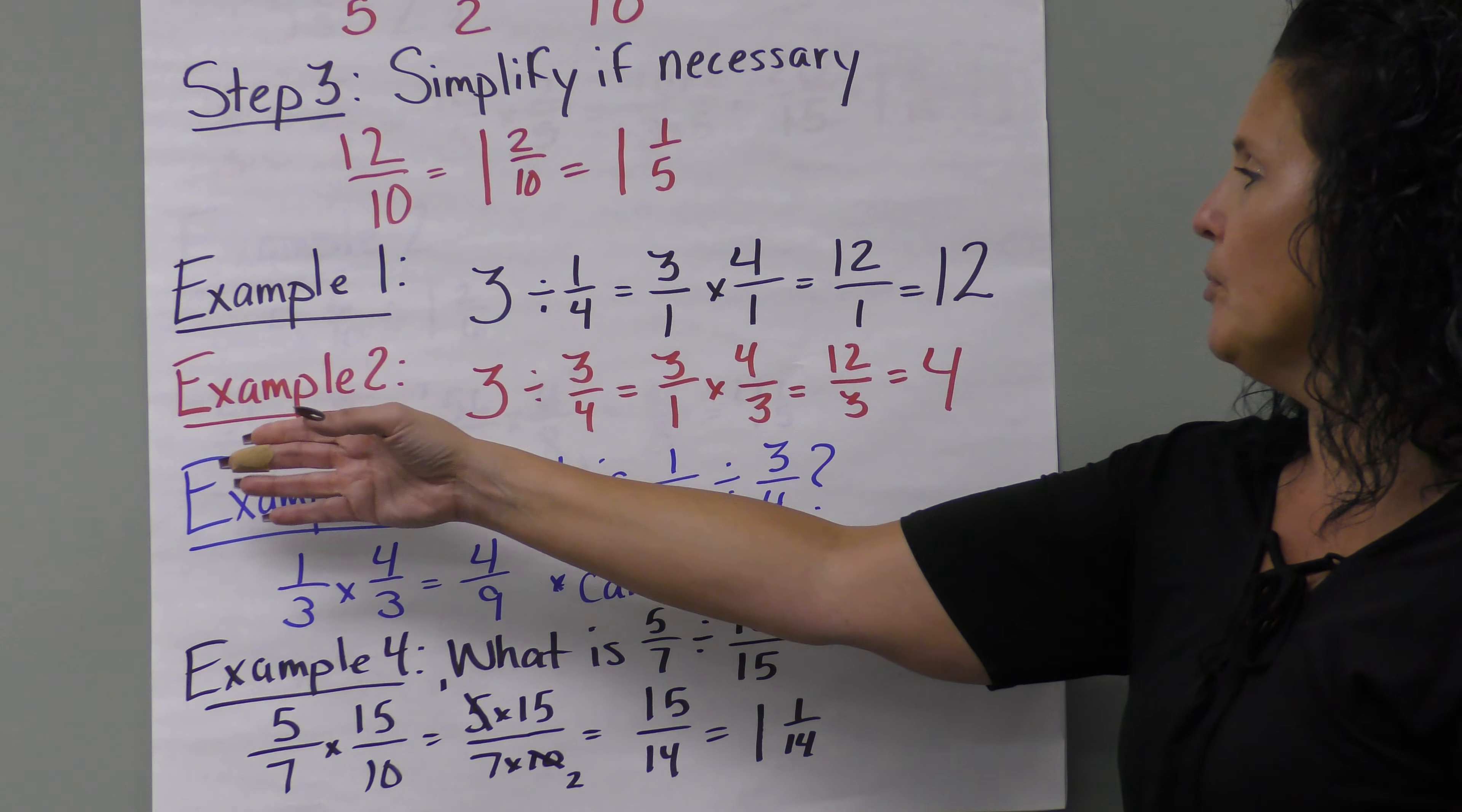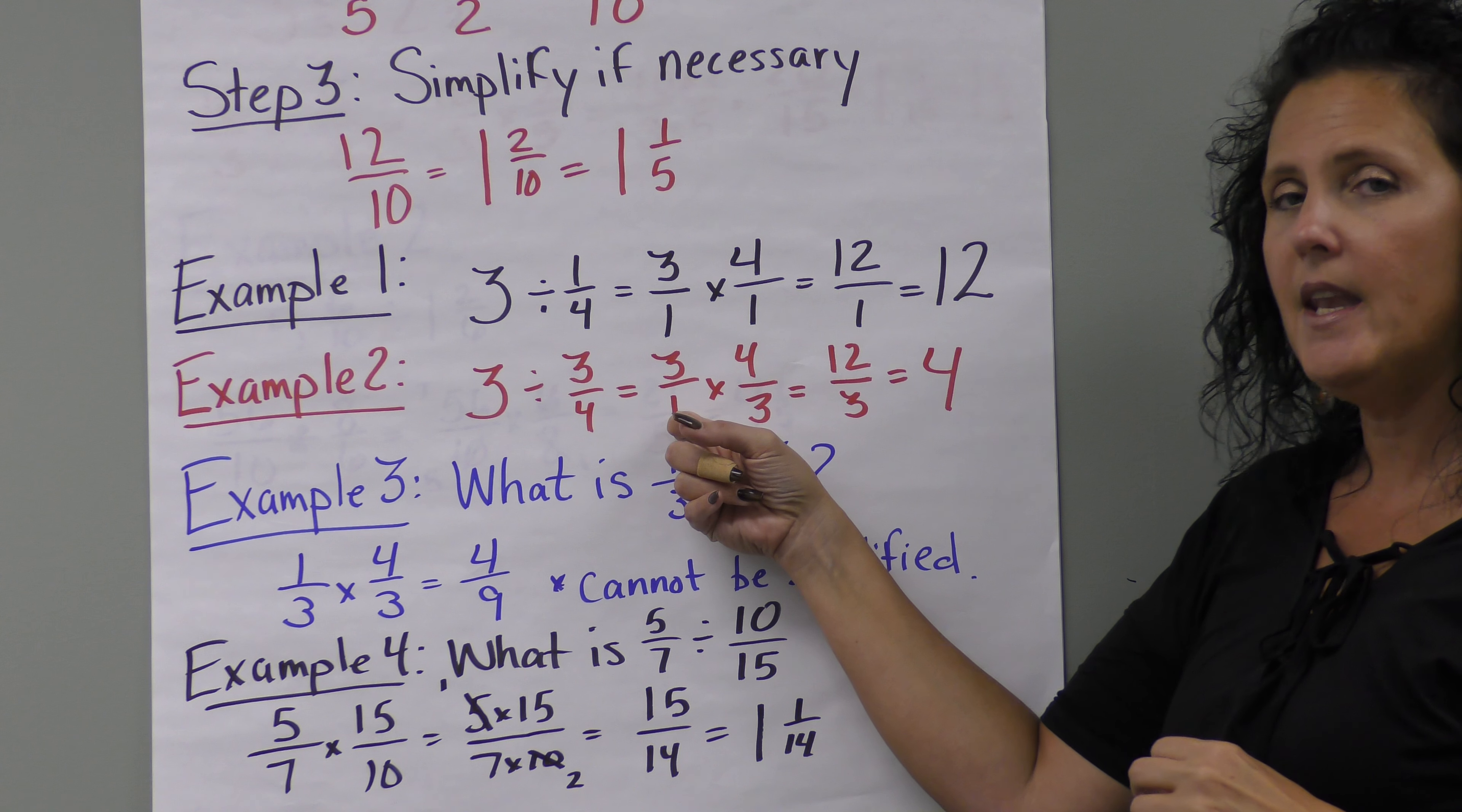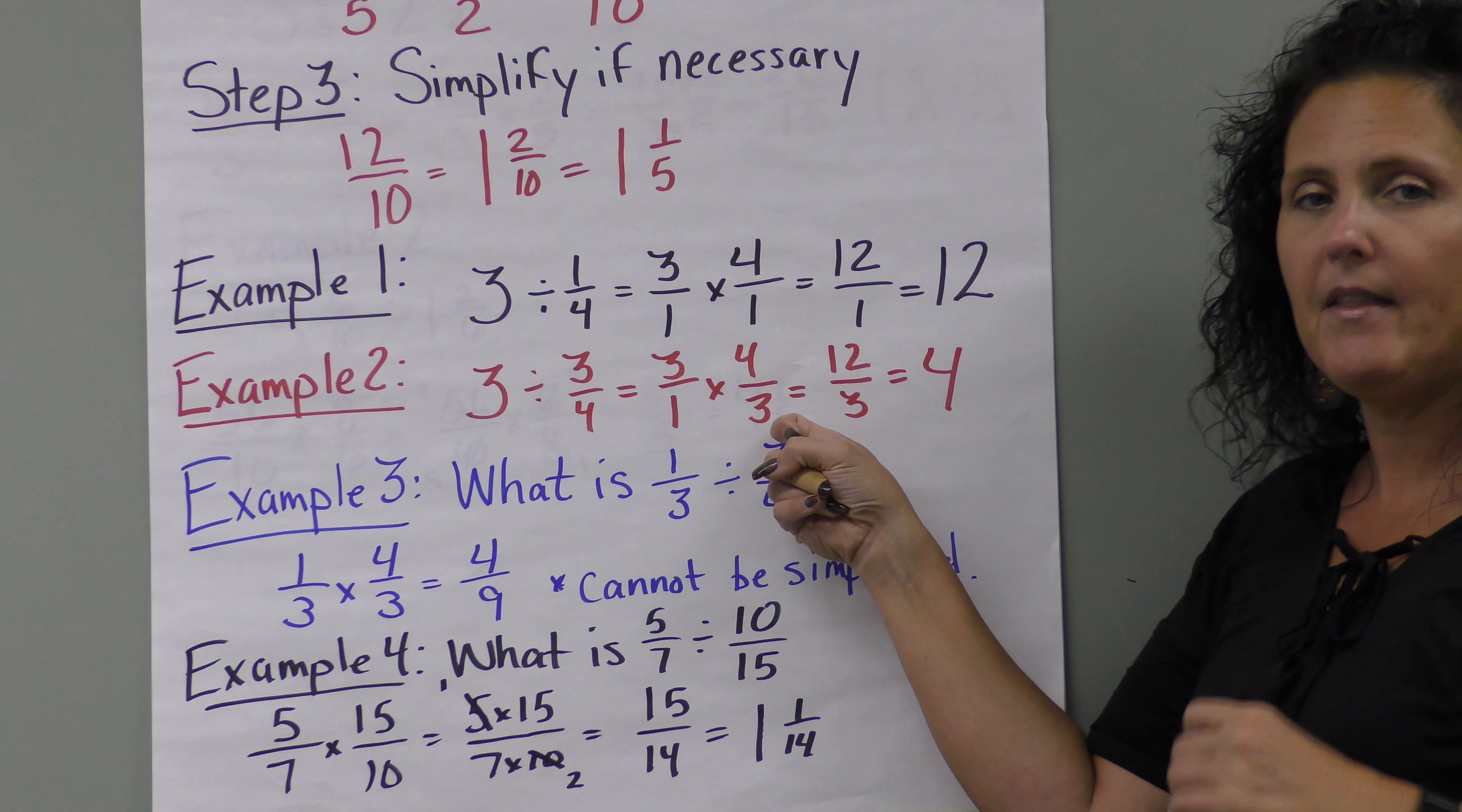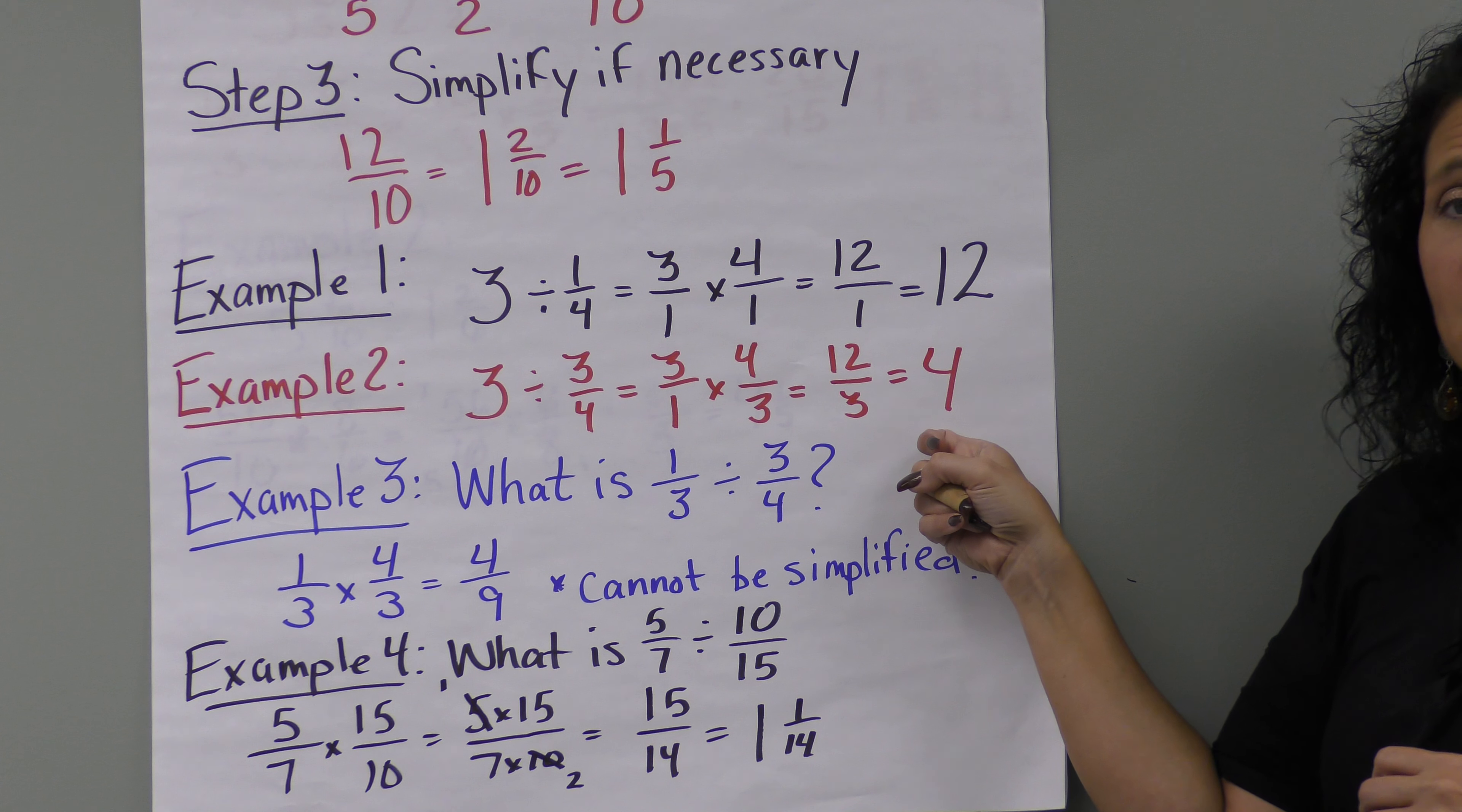Example two: we're still using a whole number. We have three divided by three-fourths. Put three over one, and multiply by the inverted form. Flip it to four over three, then multiply. Three times four is twelve, one times three is three. We can simplify because three goes into twelve evenly four times. Our final answer is four.